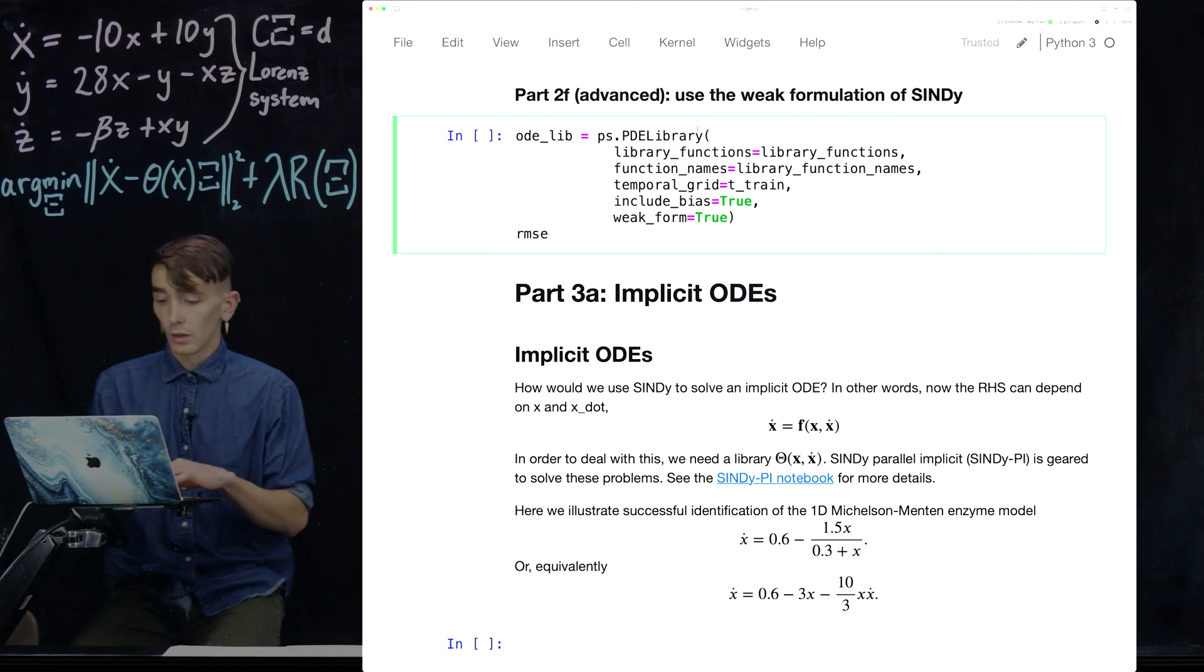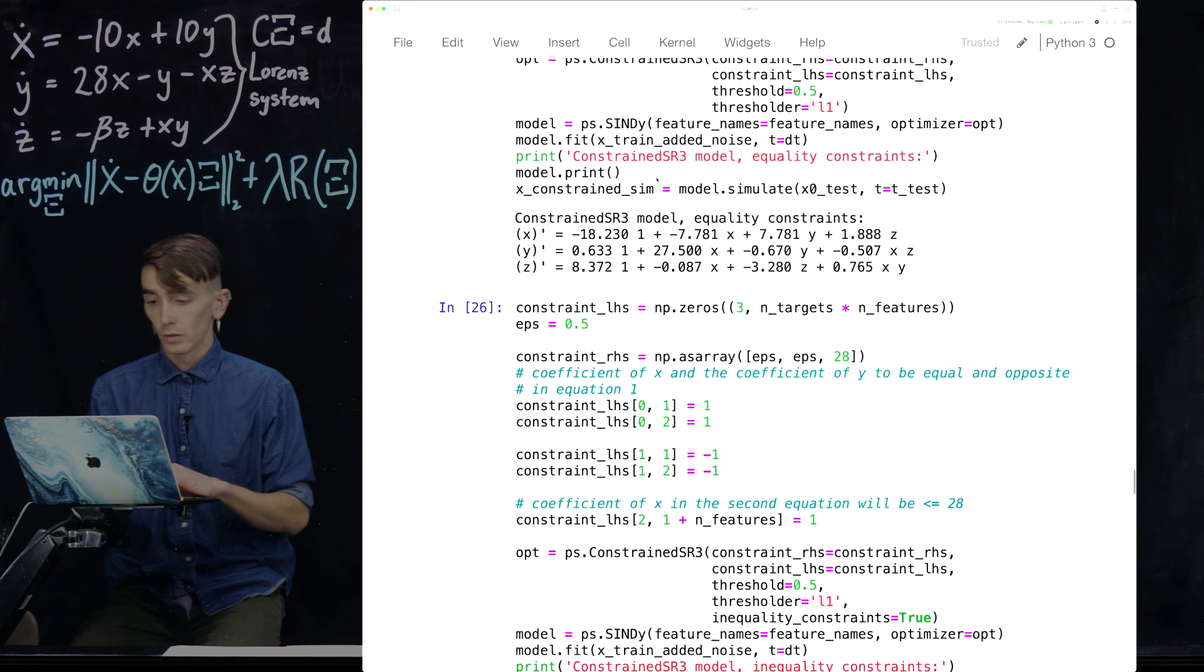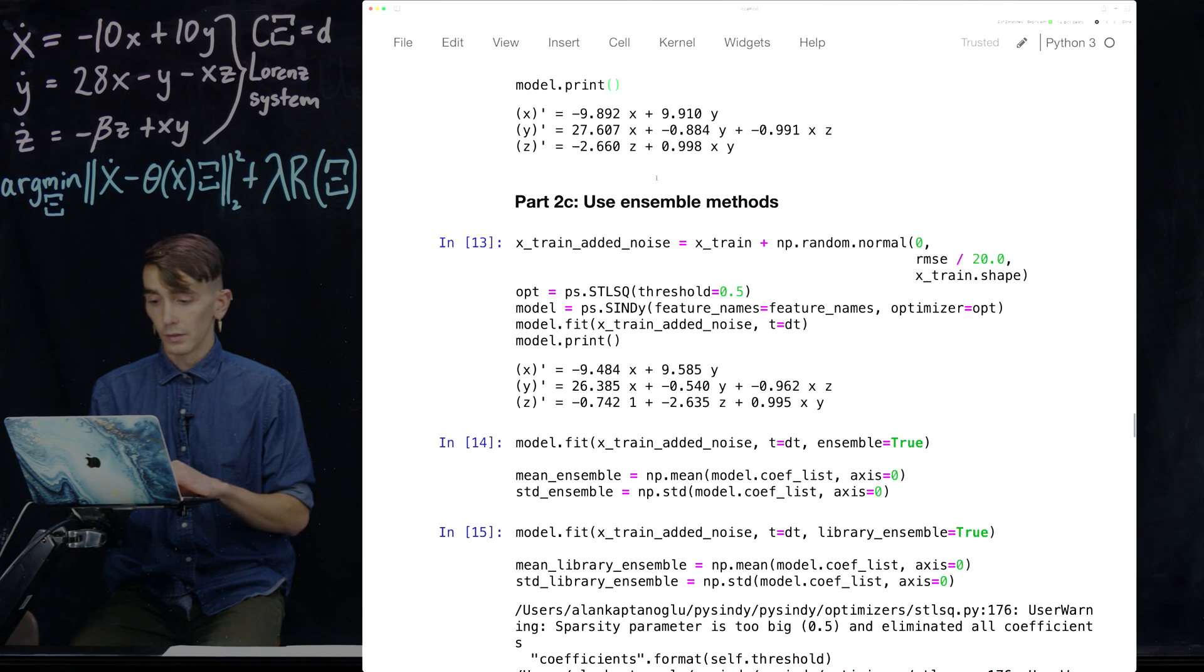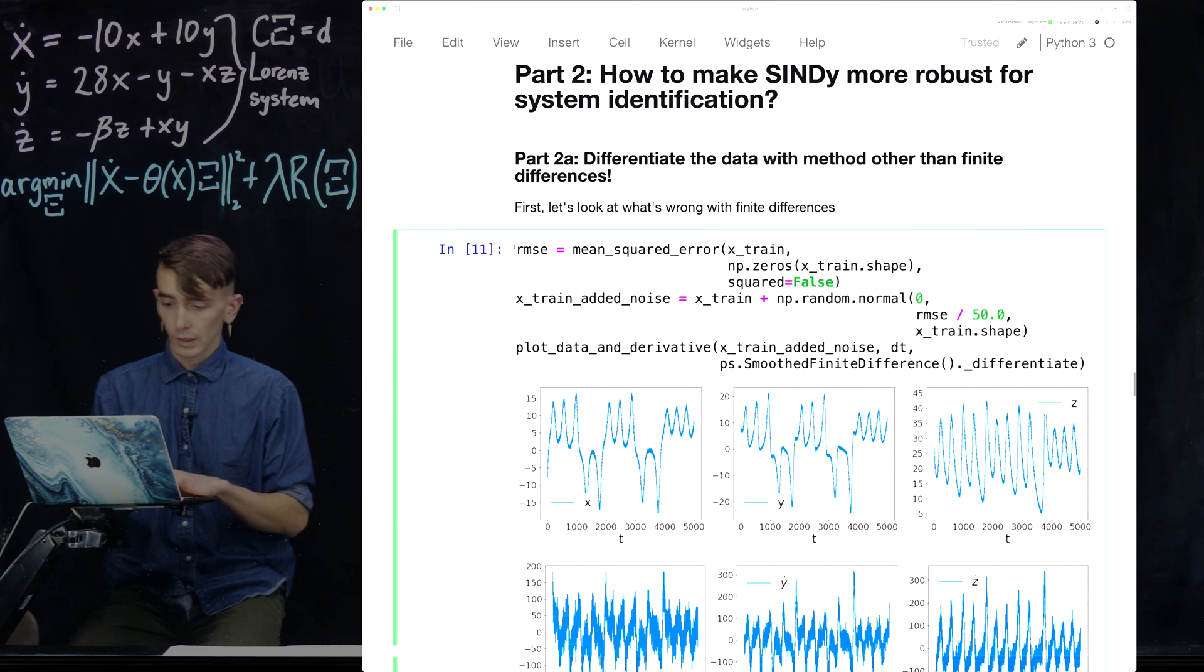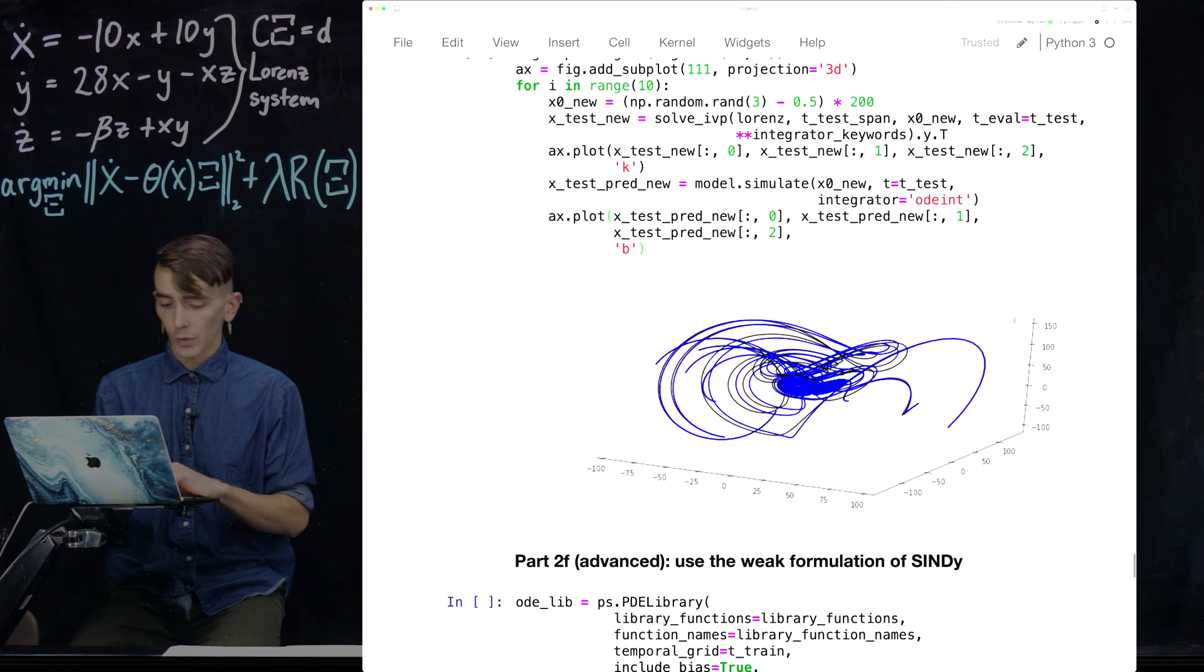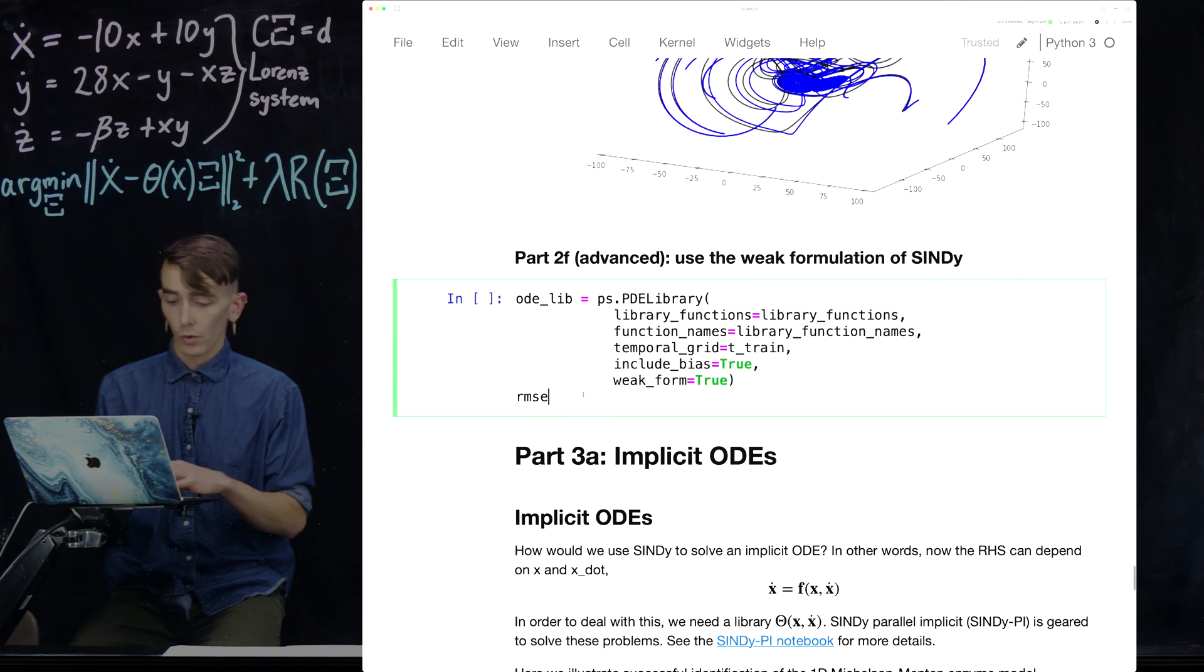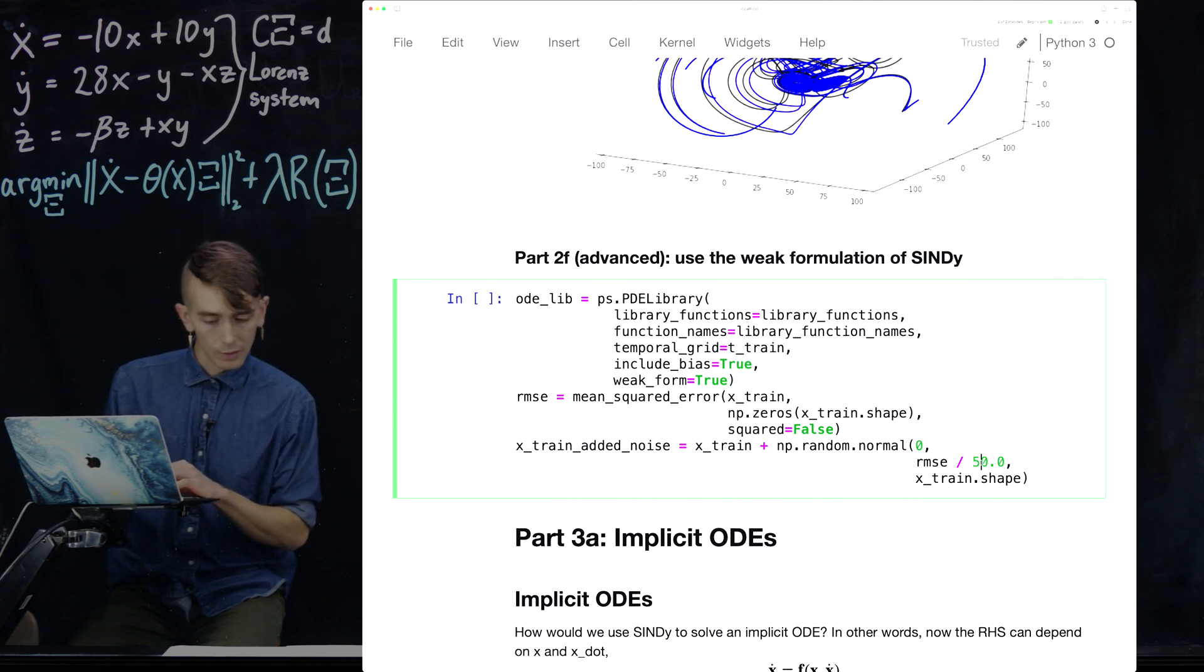Once again, we can... Let's just copy and paste the noisy data over. So, where did I define it before? Let's just copy and paste this over, since we wanna test this on actually noisy data. And we're gonna ramp up the noise a little bit more, even than before.